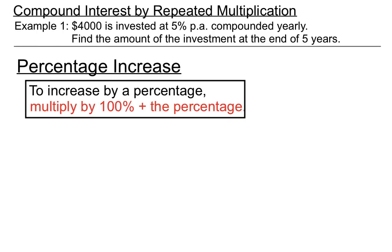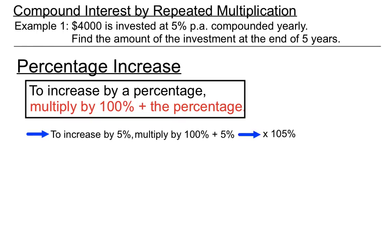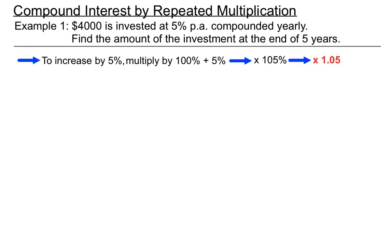To increase by a certain percent, we multiply by 100% plus the percentage we're increasing by. So to increase by 5%, we multiply by 105%. It's easier to work with decimals here, so we turn 105% into 1.05. Each year, if we multiply the original or growing amount by 1.05, that will increase that amount by 5%. So we'll keep that in mind.